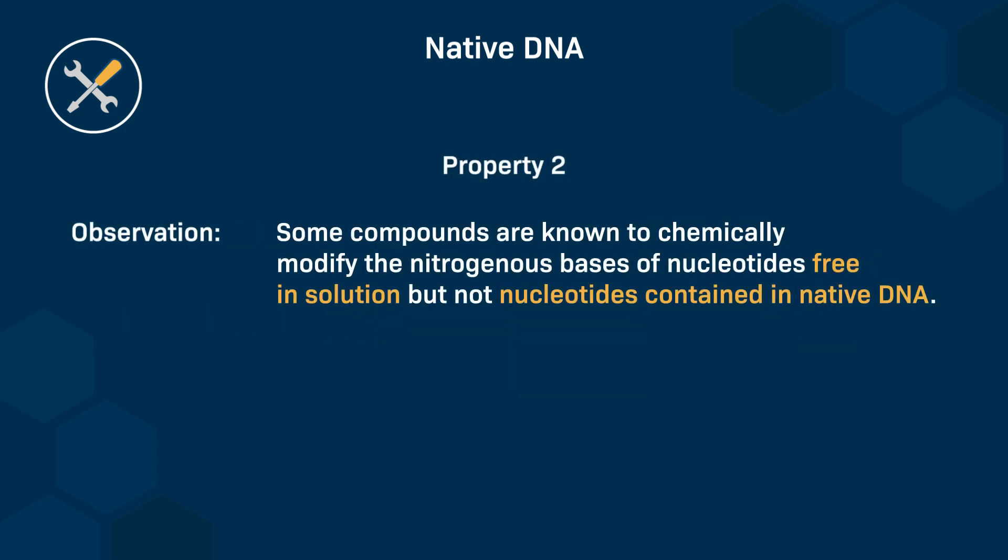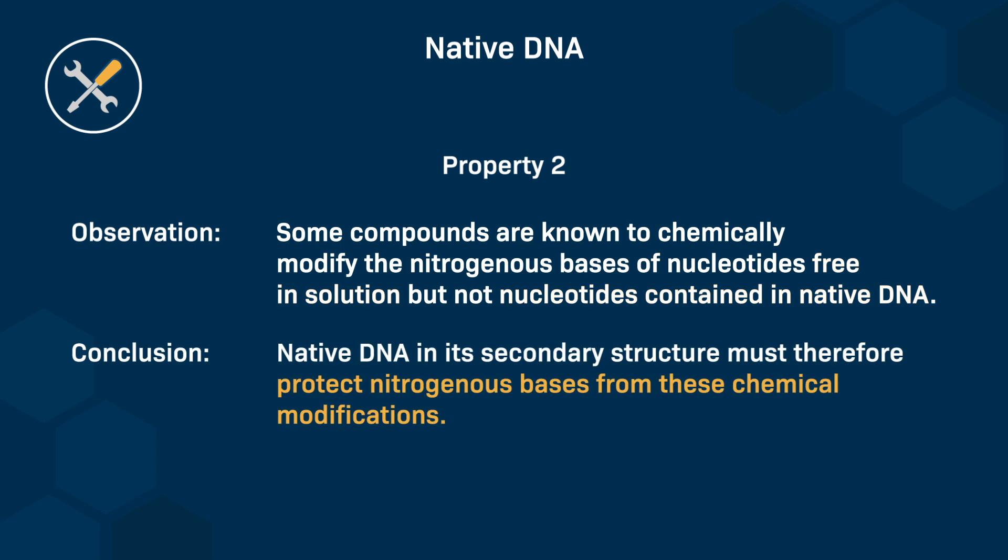The observation that certain compounds can chemically modify free nucleotides in solution, but not those in native DNA, suggests that the secondary structure of DNA protects the nitrogenous bases. This protection is likely due to a secondary structure where the nitrogenous bases are oriented inward, shielded by the sugar phosphate backbone, and by base pairing with complementary nucleotides.